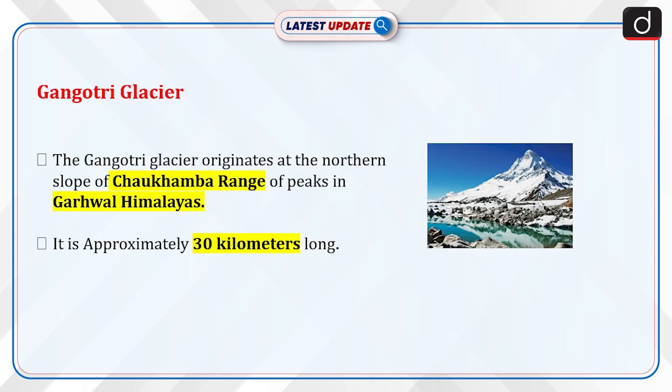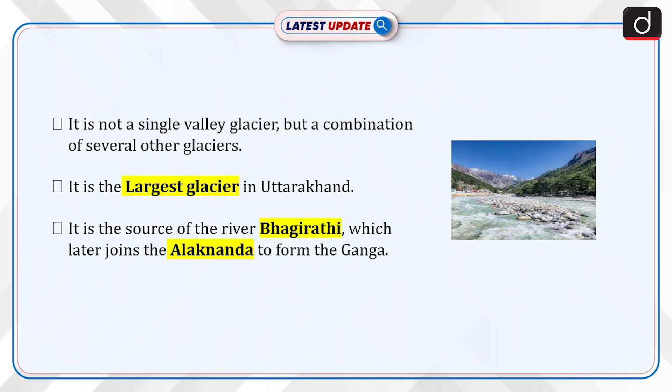The Gangotri Glacier originates at the northern slope of the Chokamba range of peaks in the Garhwal Himalaya. It is approximately 30 kilometers long. It is not a single valley glacier, but a combination of several other glaciers. It is the largest glacier in Uttarakhand. It is the source of the river Bhagirathi, which later joins the Alaknanda to form the Ganga.